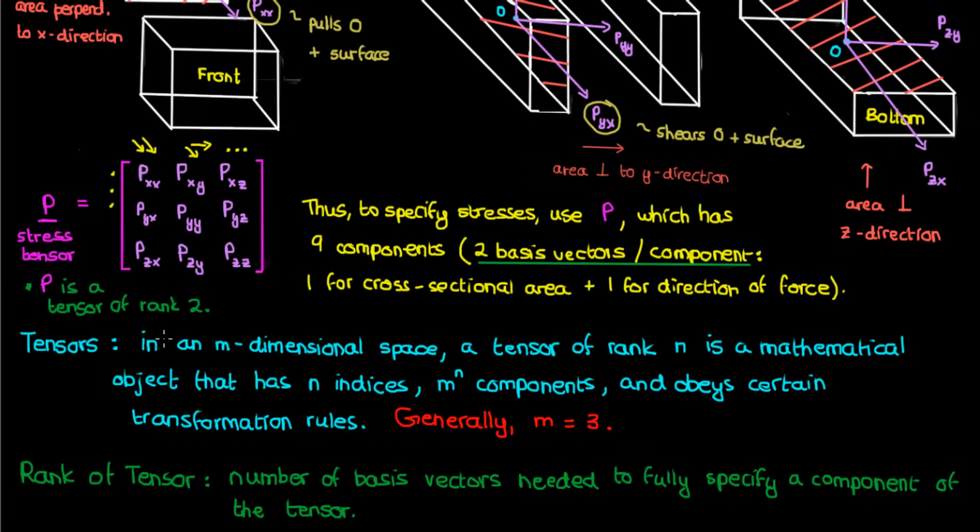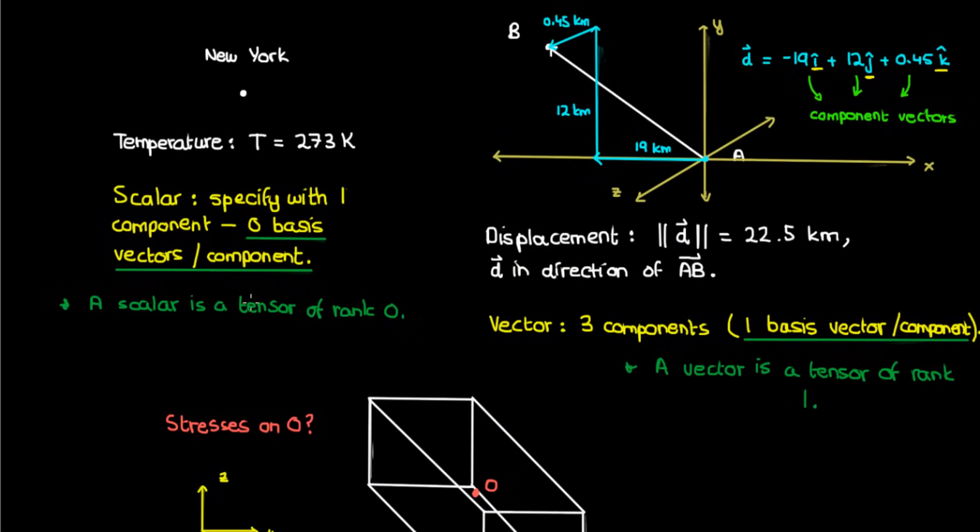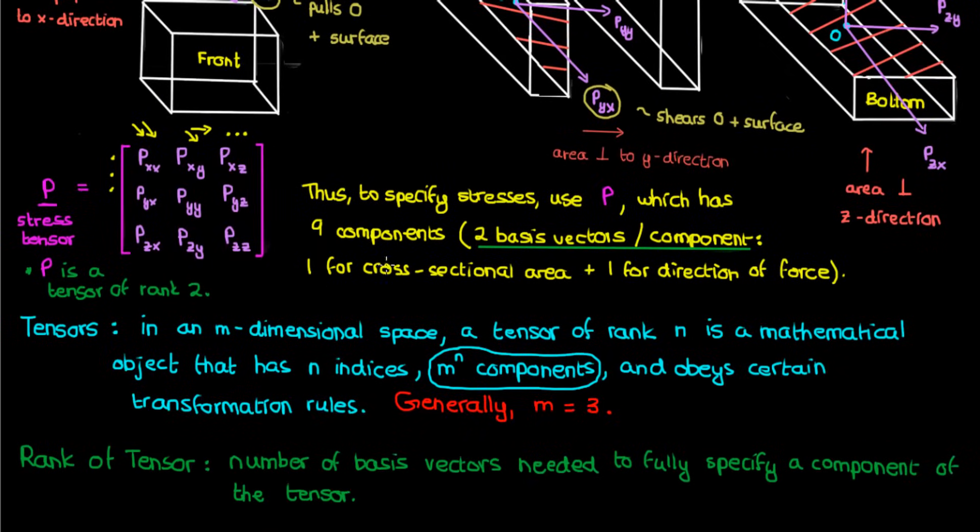Now, the definition of tensors that I wrote down here says that the number of components in my tensor equals m to the power n. Let's verify this from the three tensors we discussed earlier. My scalar has a rank of zero, so it has three to the power zero or one component, which is obviously true. My vector has a rank of one, so it has three to the power one or three components, while P, my stress tensor, has a rank of two, so it has three to the power two or nine components.